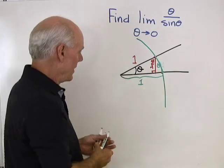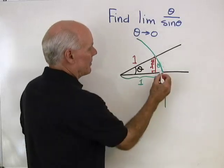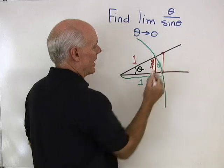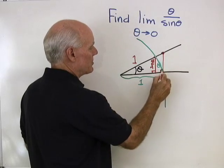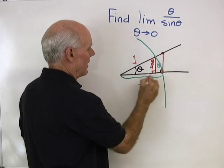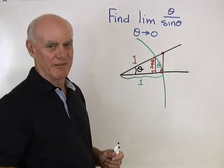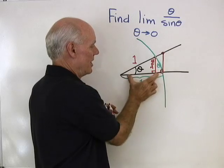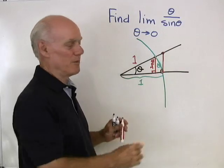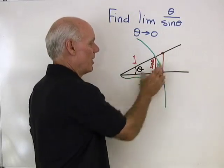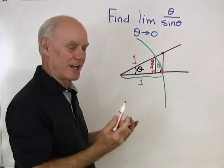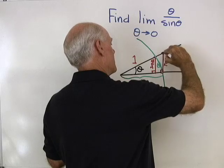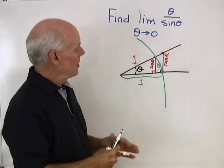Now I'm going to go back out to that point on the terminal side and go straight up to the adjacent side, forming a right triangle. The tangent of theta is the opposite side over the adjacent side, which is that side over one — so that side is tangent theta.